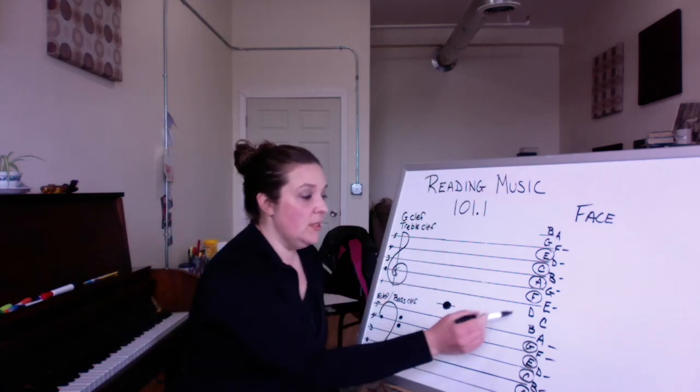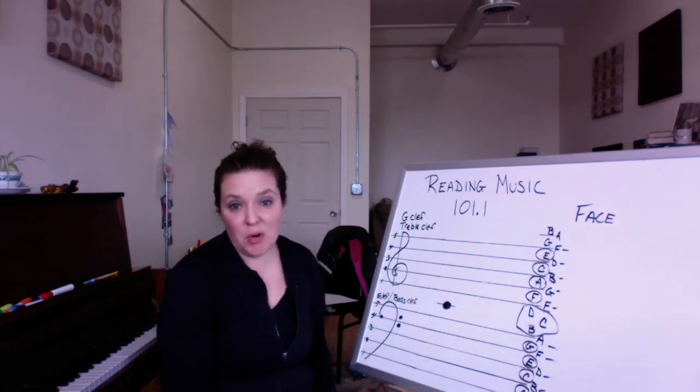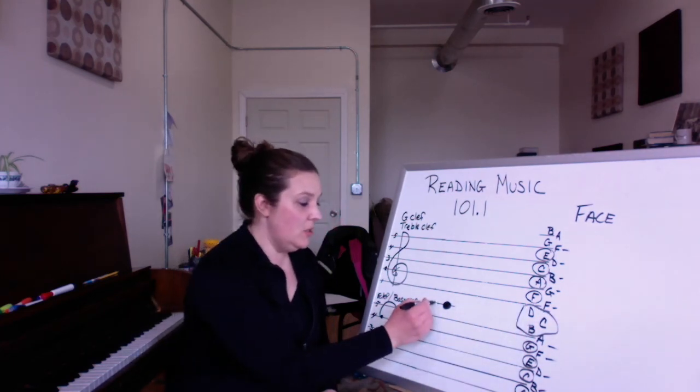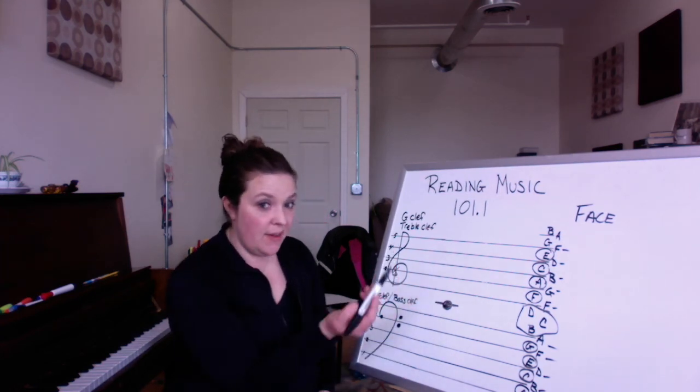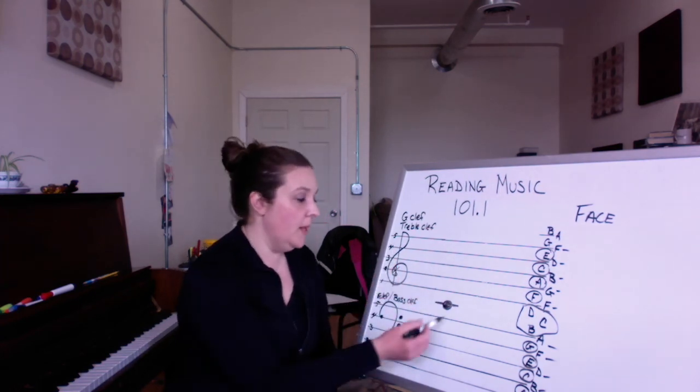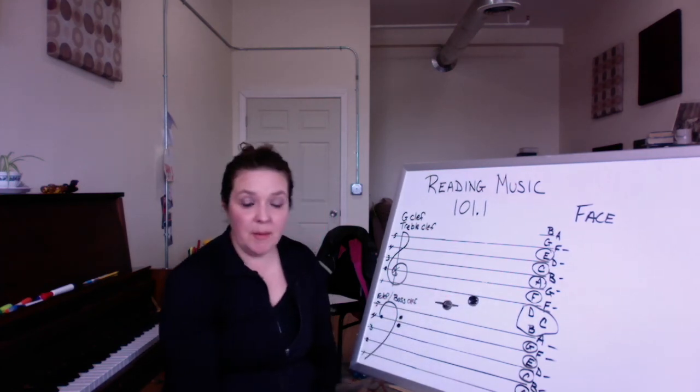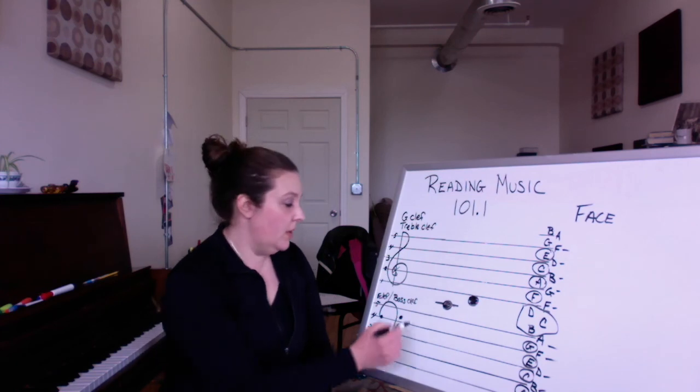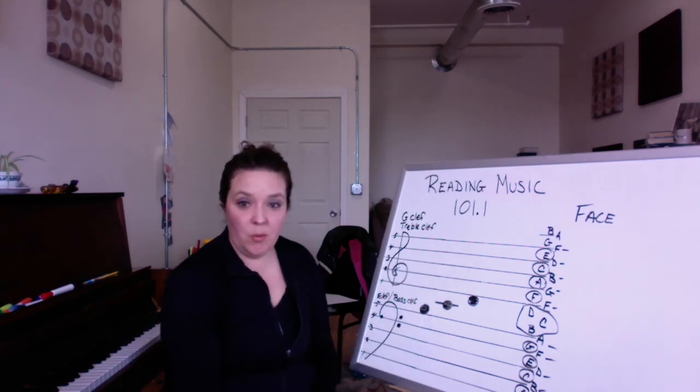And what I always tell my students, C, and D, and B, you kind of just have to memorize what they look like. C is the one that's always hanging out below the staff or right above the staff, depending on what instrument you're playing. D is stuck like a piece of gum at the bottom of the treble clef. And your B is always going to be the one that sits on top, kind of like a little duck on the top of the water.